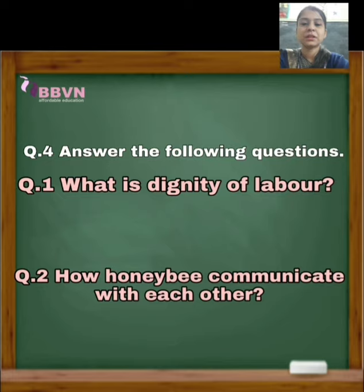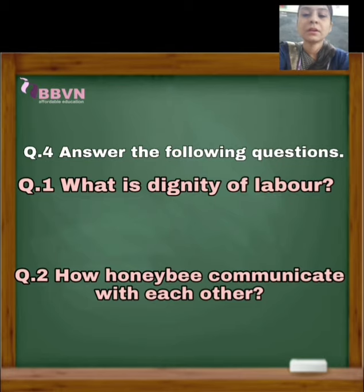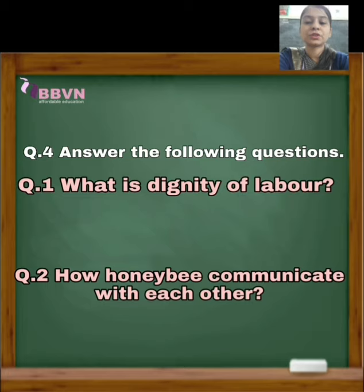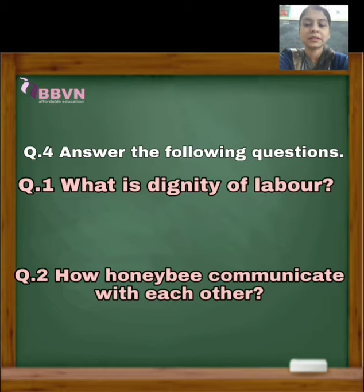And the last question is, answer the following questions. आपको इन दोनों questions का answer देना है. Question number 1: What is dignity of labor? Dignity of labor क्या होता है? Question number 2: How do honeybees communicate with each other? जो honeybees होती हैं, वो एक दूसरे से communicate करने के लिए क्या करती हैं? Is it clear students? आपको 1-1 sentence में इनके answers देने हैं.